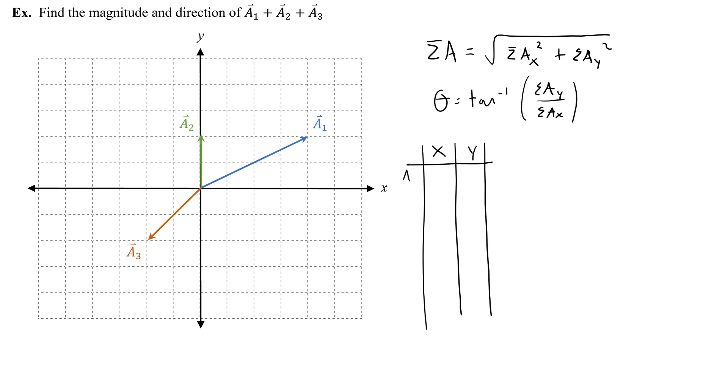Let's start with a1. Vector a1's x component is 1, 2, 3, 4, positive 4. And a1's y component is 1, 2, positive 2. So I put those components in my little chart.